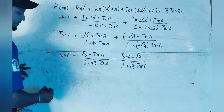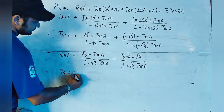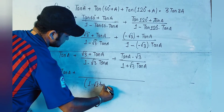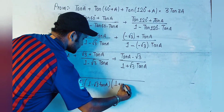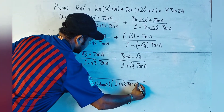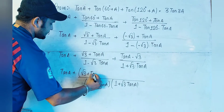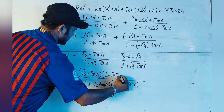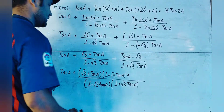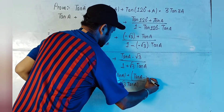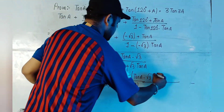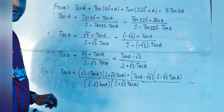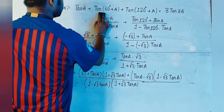Now we take the LCM and simplify further. We have tan(a) plus the two fractions. The LCM for the denominators (1 - √3·tan a) and (1 + √3·tan a) is (1 - √3·tan a)(1 + √3·tan a). So we write (√3 + tan a)(1 + √3·tan a) plus (tan a - √3)(1 - √3·tan a), all over the common denominator.